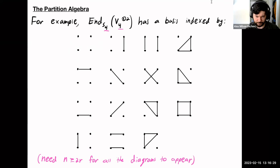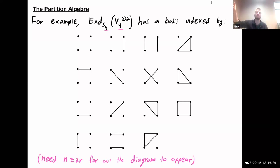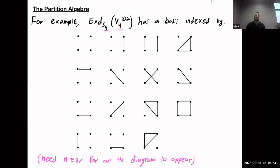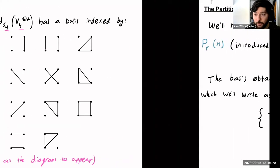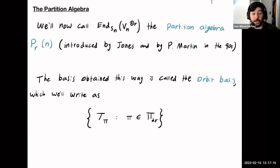Quick question: my exponent R is the number of columns I have? Yes — that's the number of vertices in the top and the bottom, so you have a total of 2R vertices. We're going to call this object, End-Sn of the R-th tensor power of Vn, the partition algebra, P(R,N). It was introduced by Jones and Martin in the 90s. It's called the partition algebra because the bases are indexed by these set partitions. The basis we just obtained is called the orbit basis, written T sub pi, because we found it by looking at orbits of the Sn action.